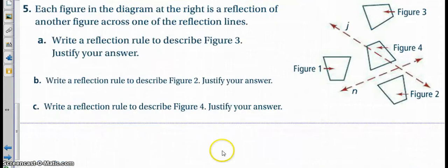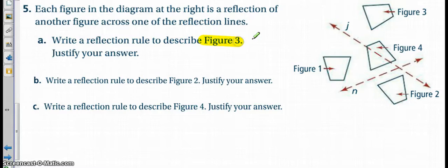So then when we're trying to write reflection rules, like here we're looking at figure three, and we're trying to write a reflection rule for how this figure can be a reflected image or have a reflected image with another one. So if we compare line n, it doesn't feel like there's anything out here. So now let's look at line j.